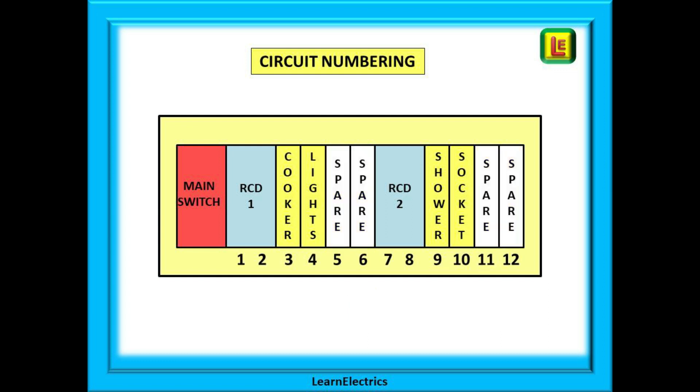The method I use and the way we teach it at LearnElectrics is to number all the ways in strict numerical order. The first way after the main switch is number 1 and a 12 way board will be labelled 1 to 12. Now complete your schedule of test results and write in exactly what is in every way. RCD in ways 1 and 2. Then breakers in 3 and 4. Include the spare ways in 5 and 6. And so on. Way 11 was a spare but we have now added a new circuit in that position. But because we have chosen this better method of numbering it makes no difference to the logic or order of the other circuits. Life just goes on and hopefully this method makes sense.